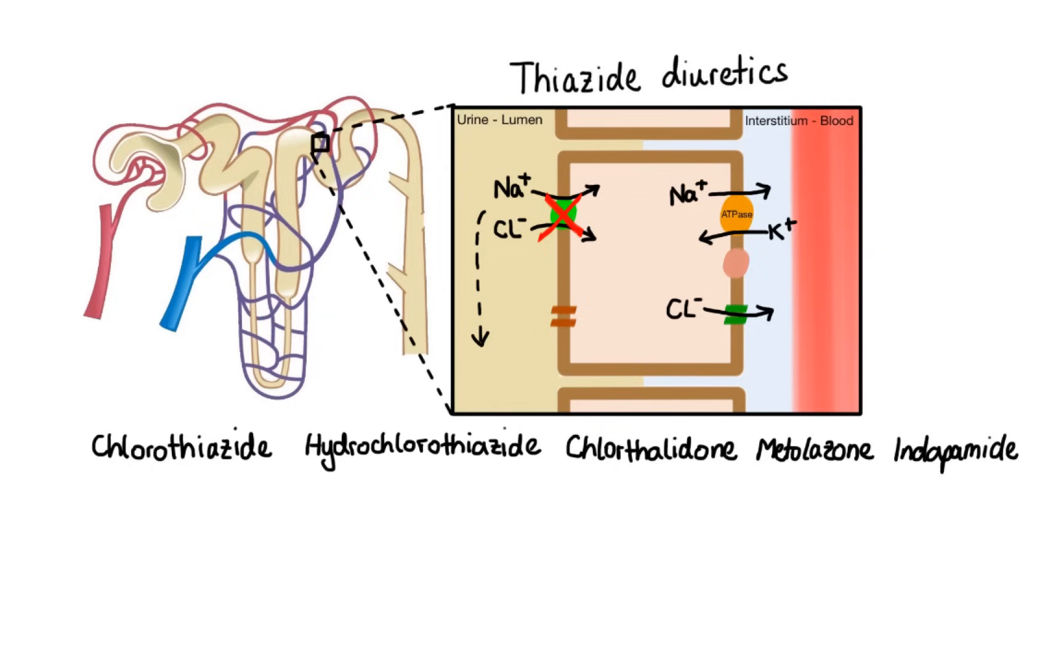Now, when it comes to side effects, just like loop diuretics, thiazides can cause hypokalemia, which results from increased delivery of sodium to the distal parts of the tubule. Moreover, similarly to loop diuretics, thiazides can also lead to hyperuricemia by interfering with uric acid transport, which in turn may exacerbate gout.